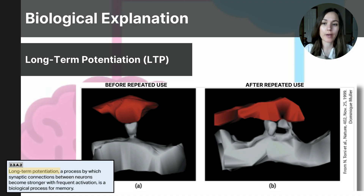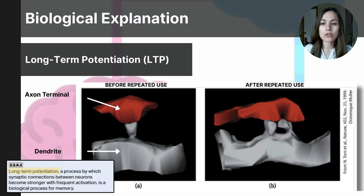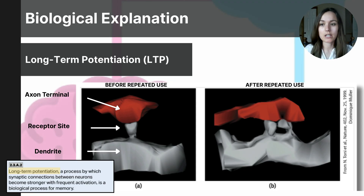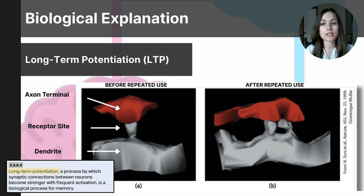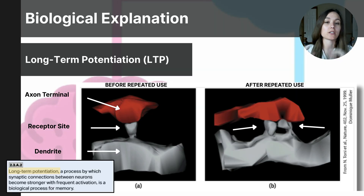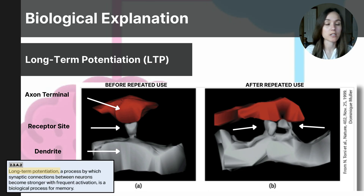In image A, you can see the red axon terminal of the sending neuron, and below it is the gray dendrite of the receiving neuron. There is a gray ice cream cone-shaped object extending up from the dendrite toward the red axon terminal — this is a receptor site receiving the neurotransmitters crossing the synapse. In image B, after repeated use, the dendrite now has two receptor sites. This physical change increases its sensitivity to detecting neurotransmitter molecules, demonstrating the biological explanation of learning and memory at the synaptic level.